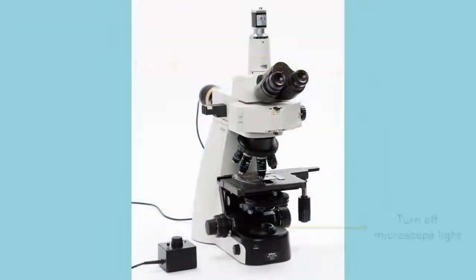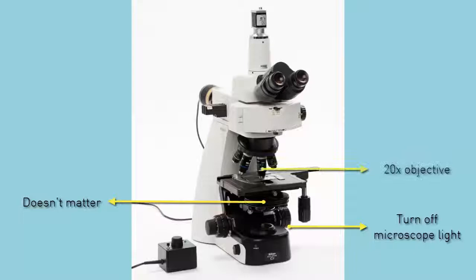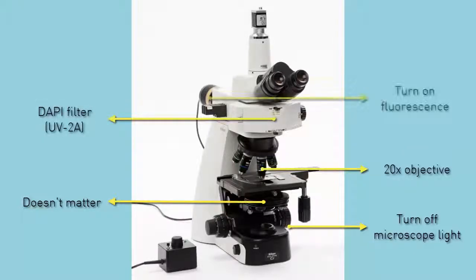Microscope settings. For vitality analysis we'll turn off the microscope light. It doesn't matter the condenser position. We'll use the 20x objective and the fluorescent module with a DAPI filter.